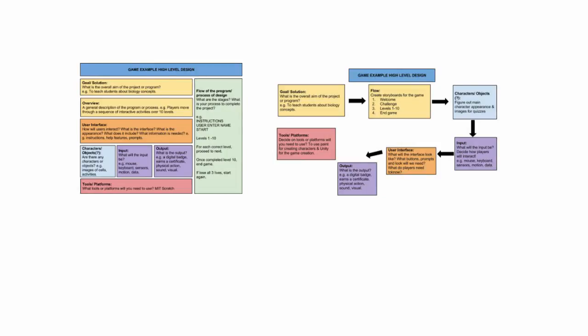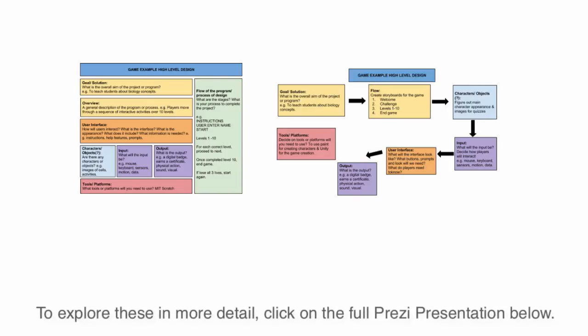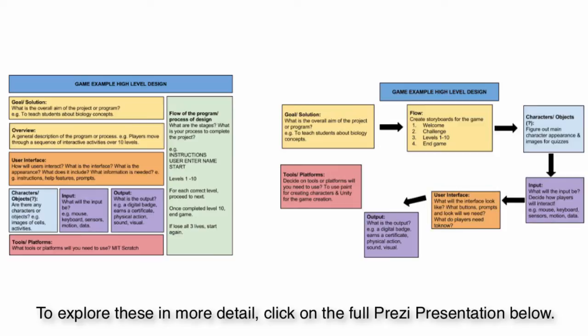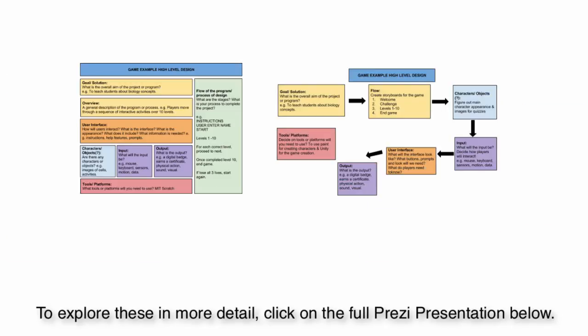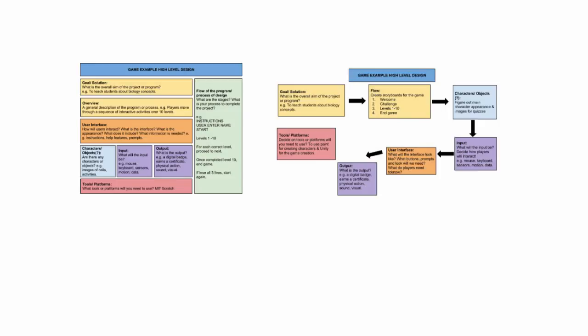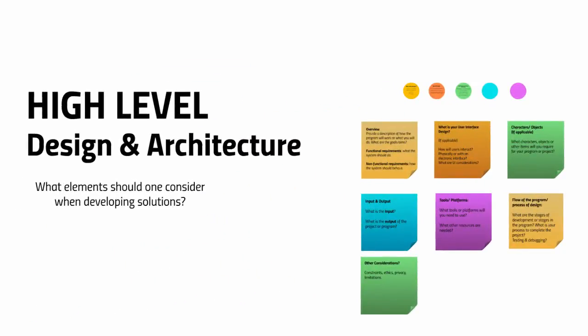Here we have two similar versions as examples of how one might mind map an overall high-level design. There's no one way to structure a high-level design — you might structure it depending on how you prefer. We present this as a guiding example. As you can see, there are many design aspects to consider in the process, and even these elements will need to be broken down further so that you can plan more detailed approaches to inform design and implementation. We'll be looking at more detailed designs shortly.